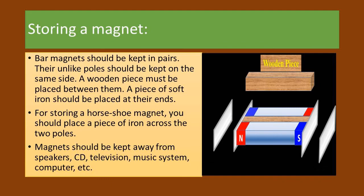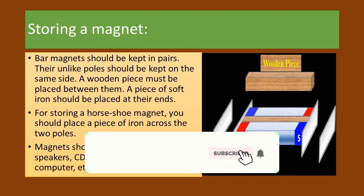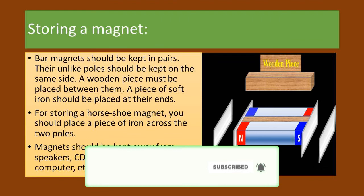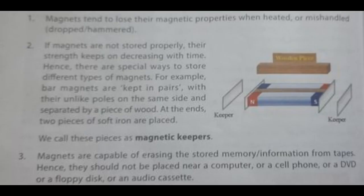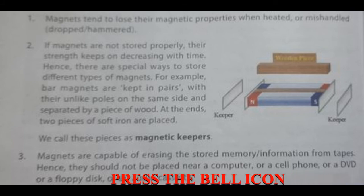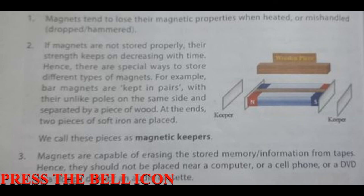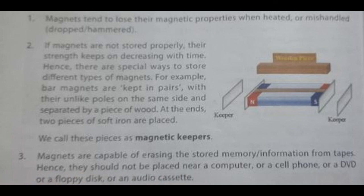Storing a magnet: bar magnets should be kept in pairs. Their unlike poles should be kept on the same side and a wooden piece must be placed between them. A piece of soft iron should be placed at their ends. For storing a horseshoe magnet, you should place a piece of iron across the two poles. Magnets should be kept away from speakers, CDs, televisions, music systems, computers, etc.